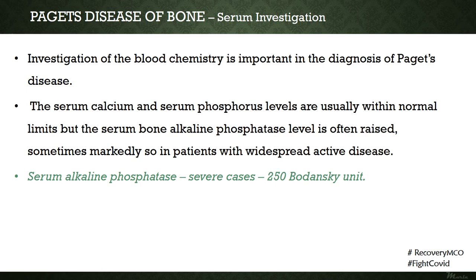Paget's disease also involves investigation of serum to support the diagnosis. Serum calcium and serum phosphate levels are usually within normal limits; however, there is a marked increase in serum alkaline phosphatase level. This was previously measured in Bodensky units — a level of 250 Bodensky units confirmed the diagnosis. Nowadays, international units are used for measuring alkaline phosphatase, and Bodensky units are no longer followed.